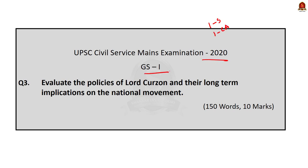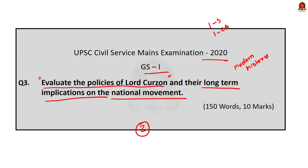This question is from 2020 GS Mains Paper 1, from the modern history part. The question is: Evaluate the policies of Lord Curzon and their long-term implications on the national movement. The question has two parts: first, evaluate the policies of Lord Curzon; and second, the long-term impacts of Lord Curzon's policy on the national movement. Now, let us start the answer discussion.